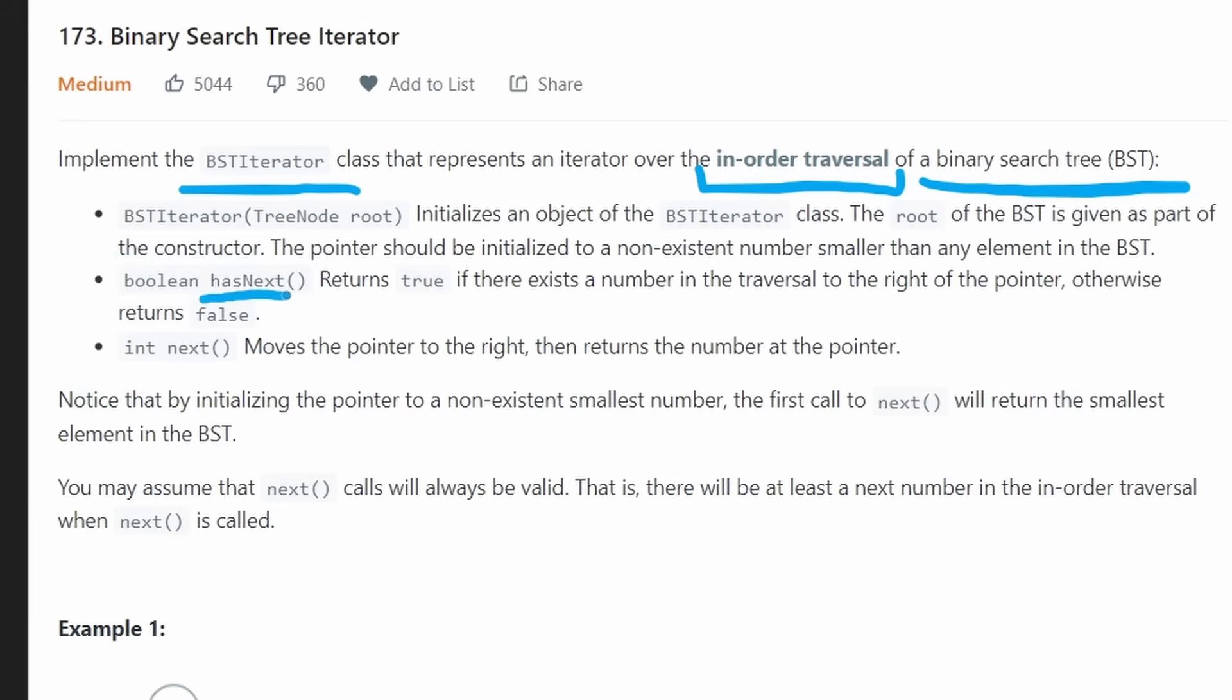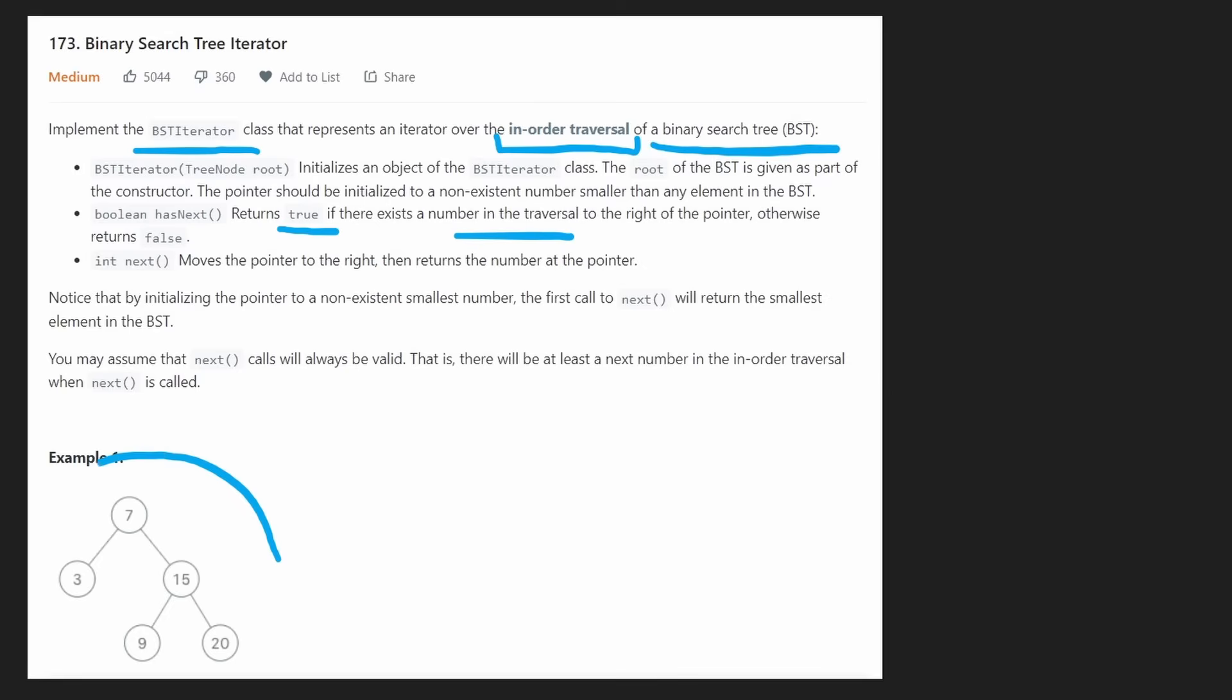So one is has_next. It's going to return true if there still exists a value in the iterator that we can return. So suppose this input, the iterator is going to go through all the nodes in in-order. So at first it would do the three, then the seven, then the nine, then the 15, and then the 20, and then it would be done. After all five values, the has_next should return false because there aren't any values left for us to return. While there are still values though, then we're going to return true, but we're not actually returning the value itself with the has_next function. The next function though is the one where we're going to be returning the value.